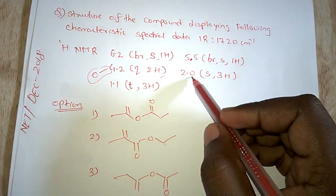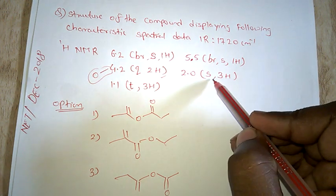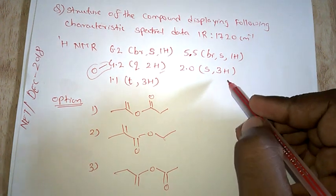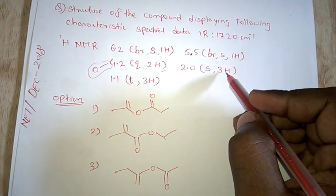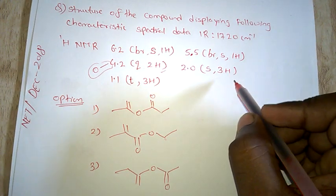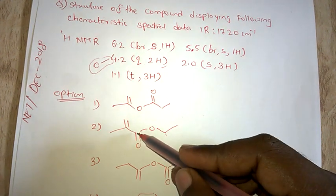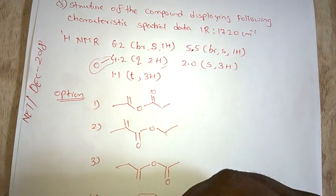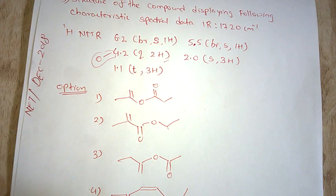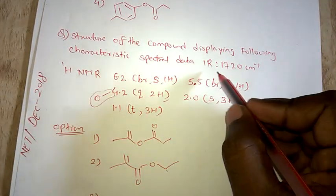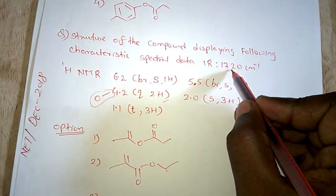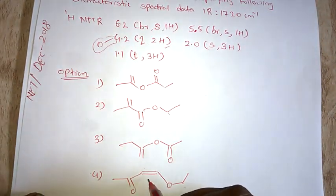Then take the 2.0, 3H singlet - this means CH3 is attached to an electron withdrawing group. Now you can see the IR value is given as 1720, so let's first look at this.